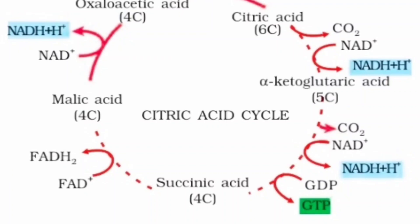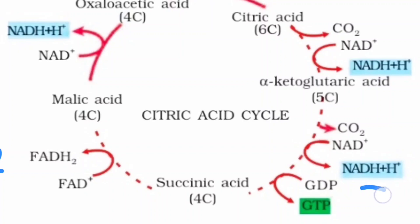Whenever the formation of malic acid from succinic acid takes place, only oxidation happens here and FAD is converted into FADH₂. Remember that one FADH₂ yields approximately two ATPs whereas one NADH yields approximately three ATPs. We now have a four-carbon malic acid, and again oxidation of malic acid occurs with the formation of NADH + H⁺.